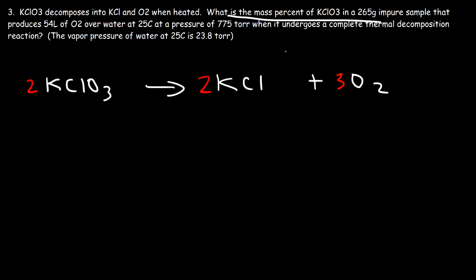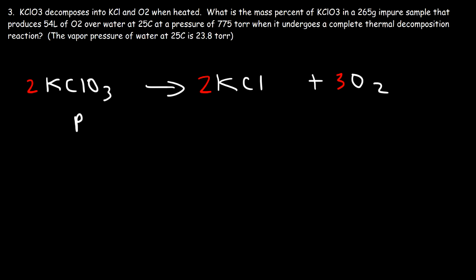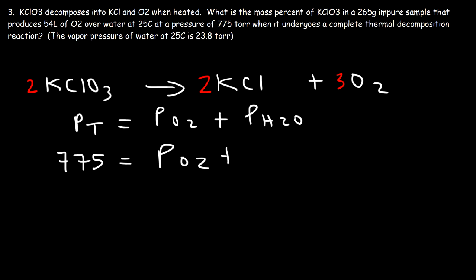What is the mass percent of KClO3 in a 265-gram impure sample that produces 54 liters of O2 over water at 25°C at a pressure of 775 Torr during complete thermal decomposition? The vapor pressure of water is 23.8 Torr, so the partial pressure of O2 is 775 minus 23.8, which equals 751.2 Torr.